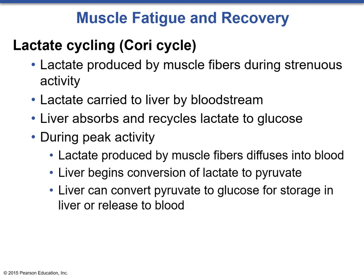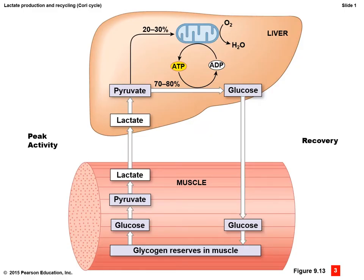Some of the lactate produced by muscle fibers during anaerobic activity is released into the blood and carried to the liver. The liver can absorb and convert lactate to pyruvate and then to glucose, where it is either stored in the liver or released to the blood. This is called lactate cycling or the Cori cycle. In the muscle, glycogen reserves are broken down, converted to glucose, then pyruvate to make ATP. If no oxygen is present, that pyruvate becomes lactate, which is shuttled to the liver, converted back to pyruvate, and then back into glucose. Other lactate is converted into glycogen or used as fuel by some muscle fibers as it re-enters the system.